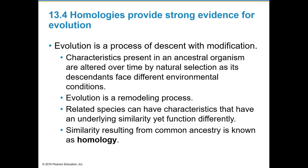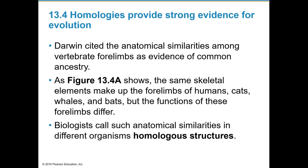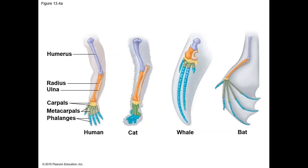Darwin cited the anatomical similarities among vertebrate forelimbs as evidence of common ancestry. The skeletal elements of forelimbs in humans, cats, whales, and bats differ greatly in function. Biologists call these anatomical similarities in different organisms homologous structures. You can see the humerus — the upper arm bone — is similar across species, yet there are clearly different functions between, say, a human arm and a bat wing.